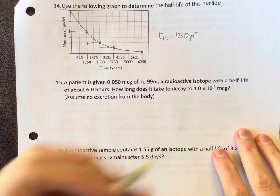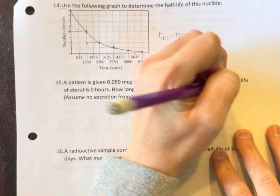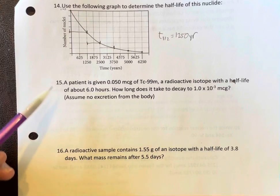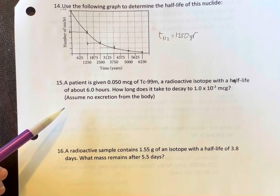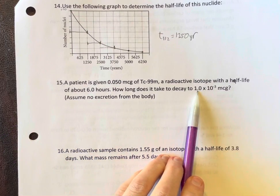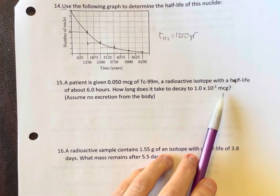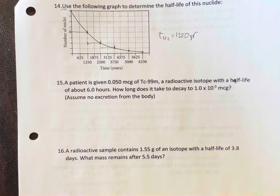Half-life, that's just embarrassing - six hours. We want to know how long does it take to decay to 1.0 times 10 to the negative 3 micrograms, and we're assuming that there's no excretion here, okay?